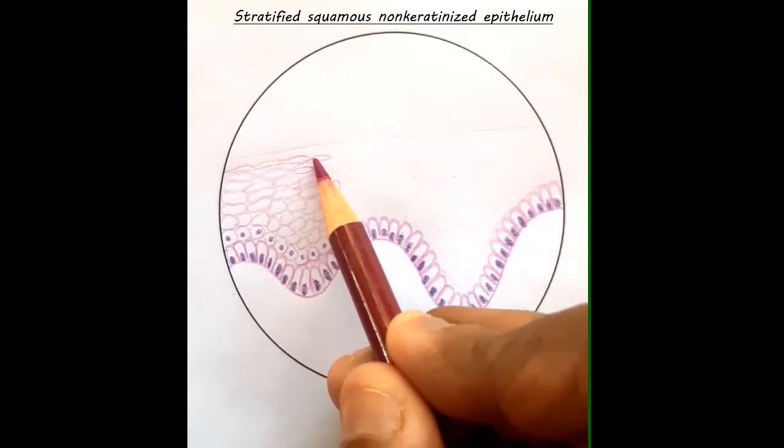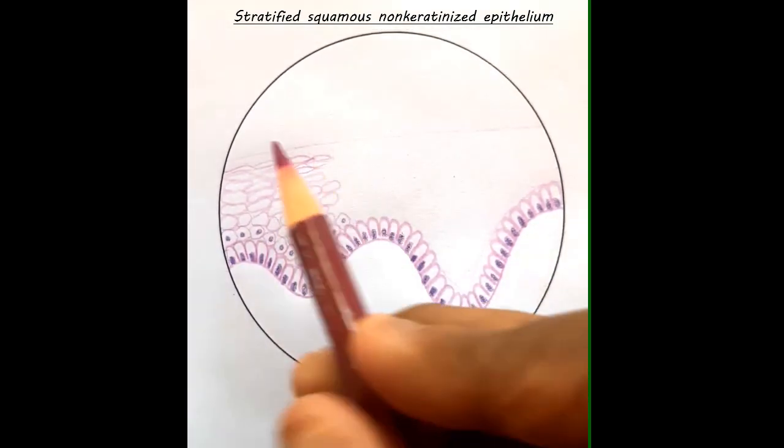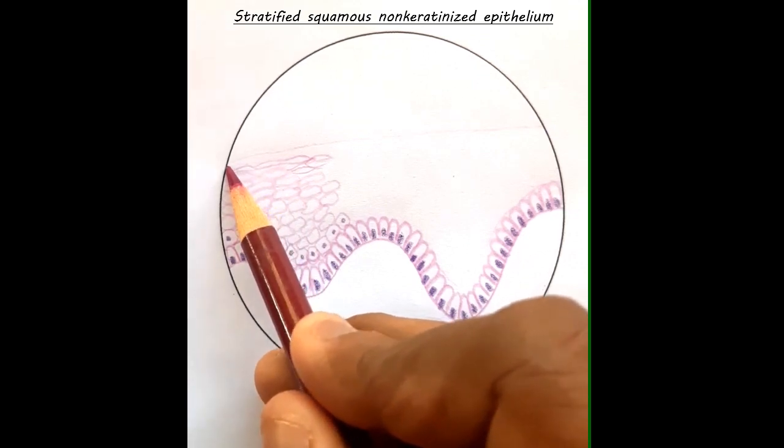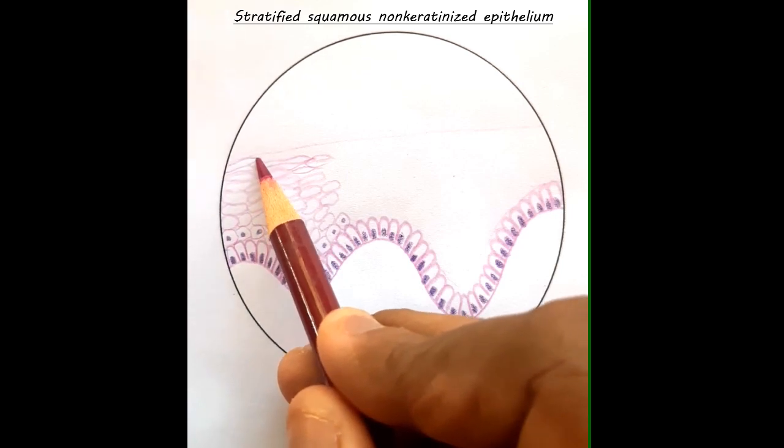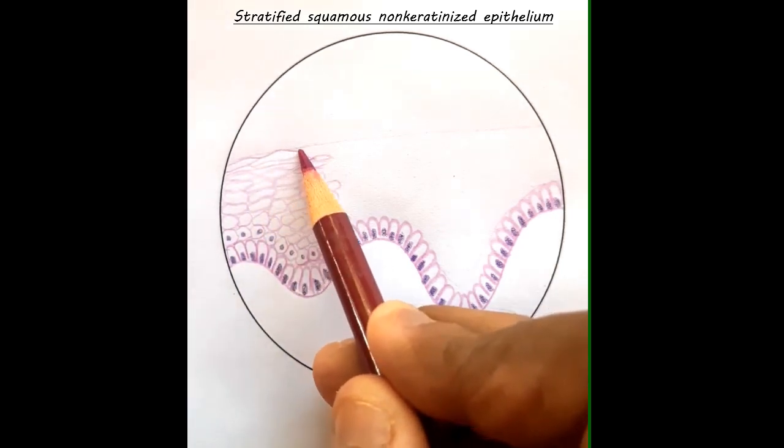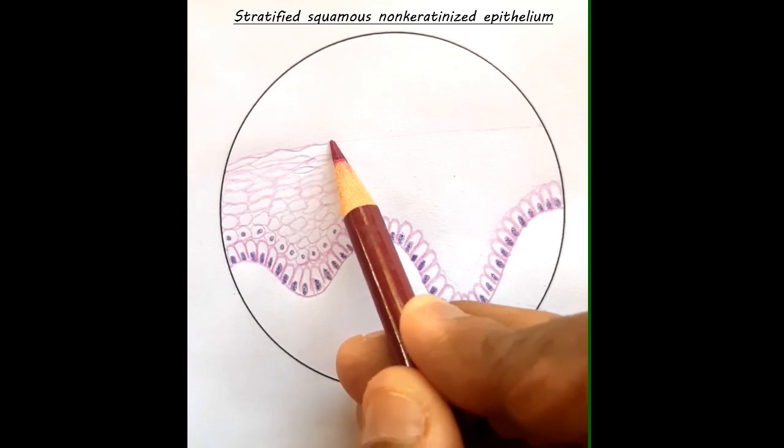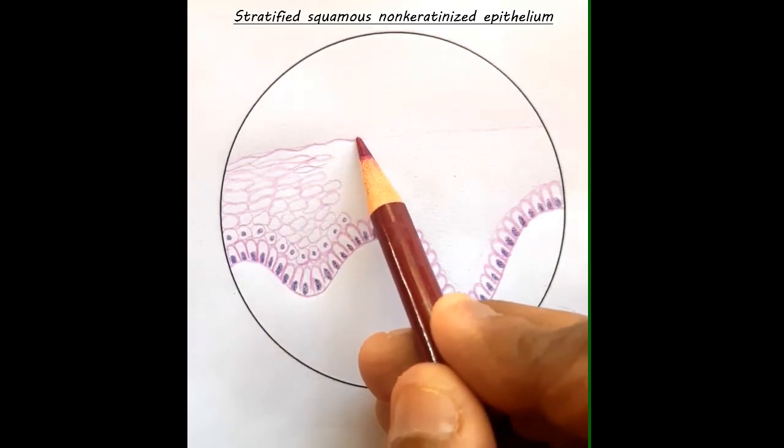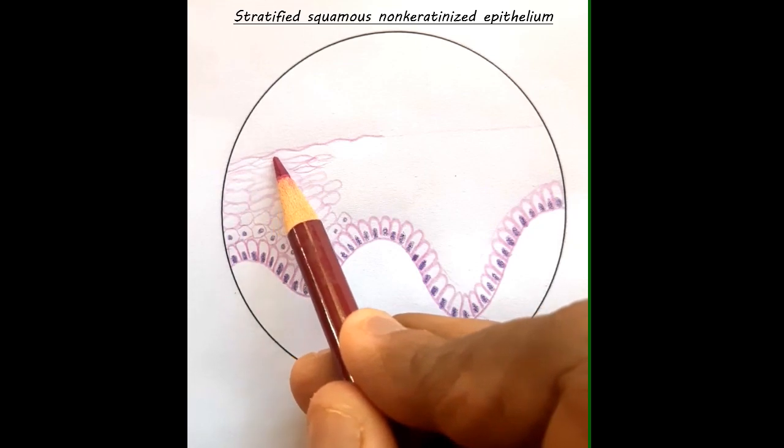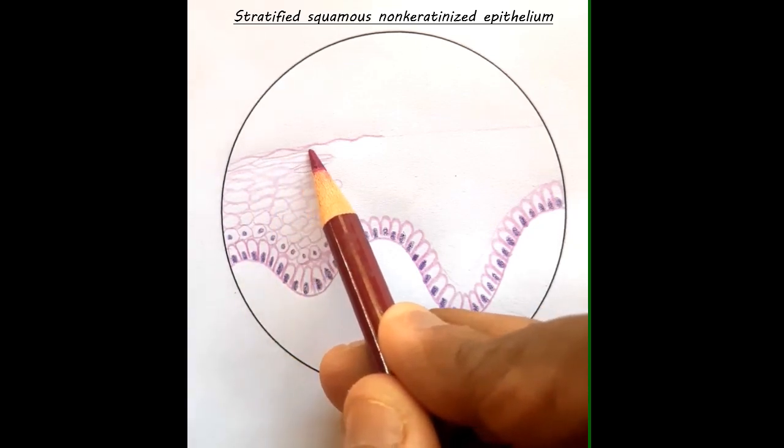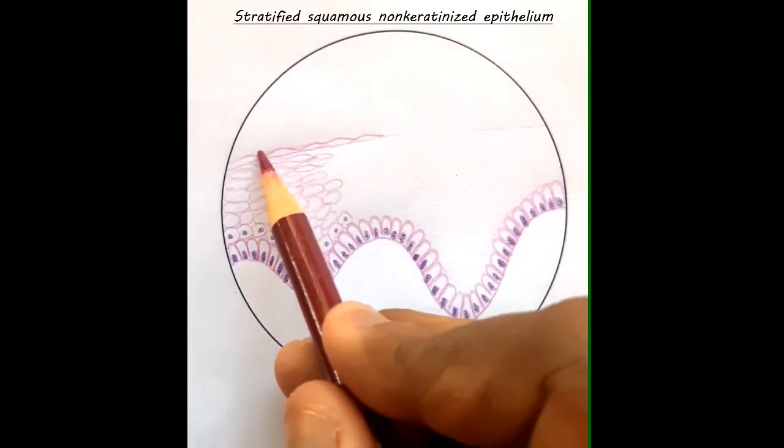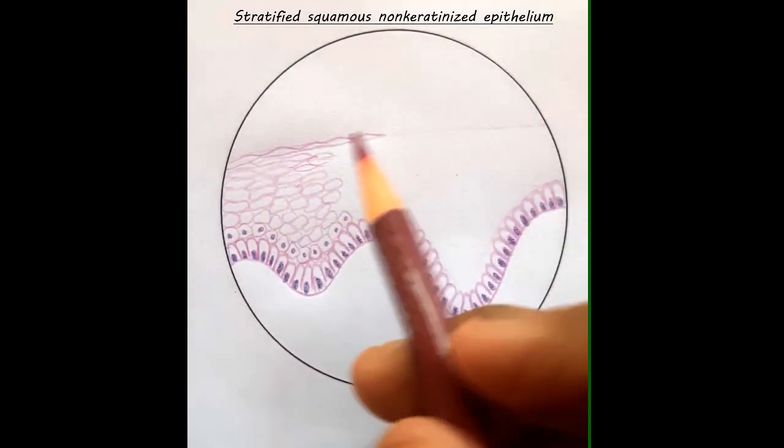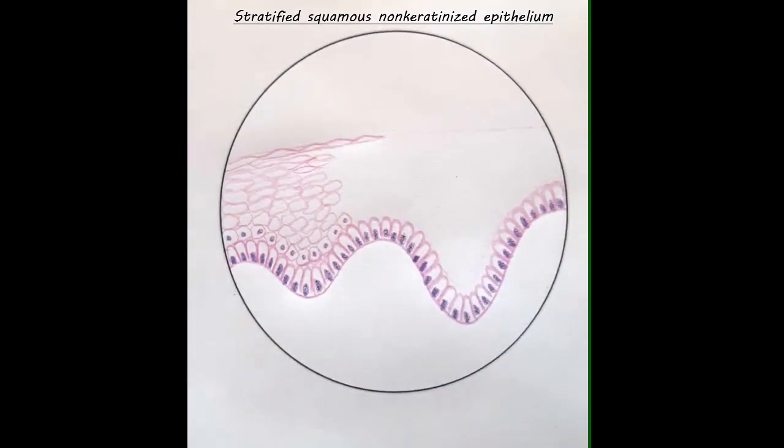Now filling a couple gaps here. Now we have reached the topmost layer, the superficial-most layer. And now I am drawing the squamous cells in their typical wavy pattern that gave its name: stratified squamous epithelium.